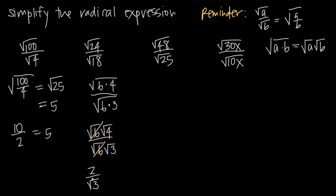We can't take the square root of 3, but as a rule you never want to leave a square root in the denominator of your final answer. So we rationalize the denominator by multiplying by the square root of 3 over the square root of 3, which is the same as multiplying by 1 — we're not changing the value. In the denominator, square root of 3 times square root of 3 gives us the whole number 3, so our final answer becomes 2√3 over 3, with the square root removed from the denominator.